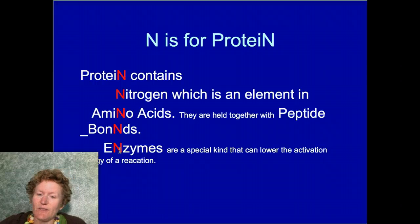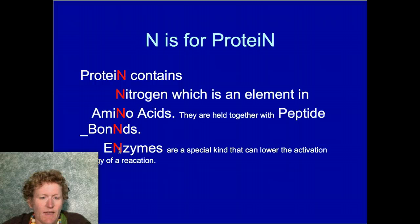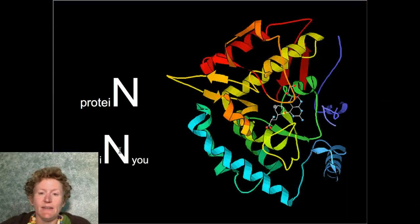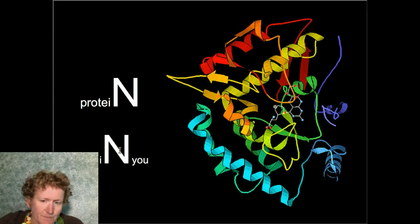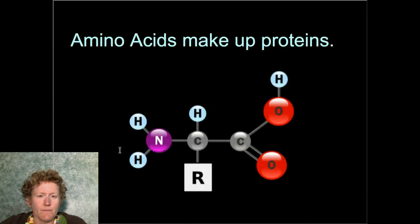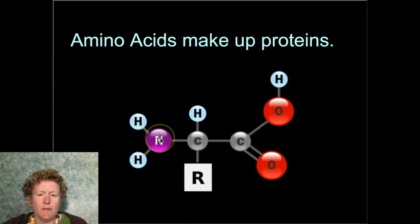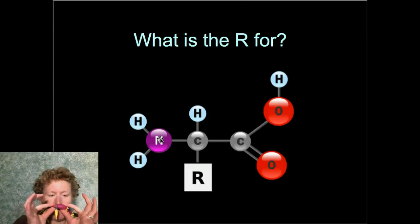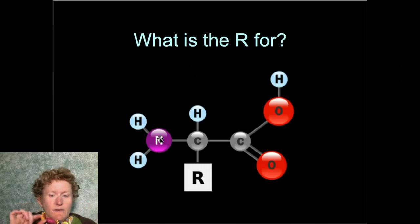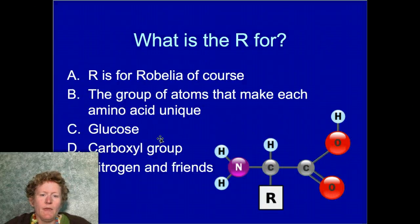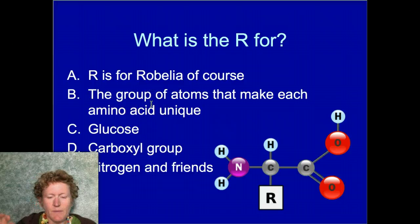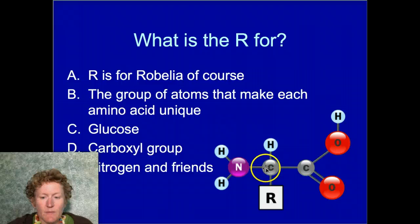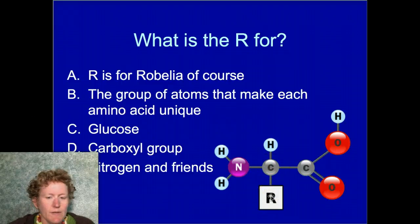Enzymes, which has an N in it, are a special kind of protein that can lower activation energy. If you have trouble remembering that extra element in proteins, look for words associated with proteins — a lot of them have N in it. Amino acids make up proteins, and the R group is the unique set of atoms that makes each amino acid different. The carboxyl group and nitrogen group always stay the same, but what's bonded to the central carbon varies depending on the amino acid.